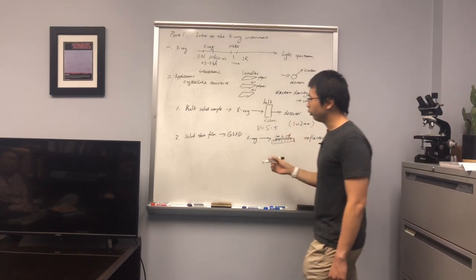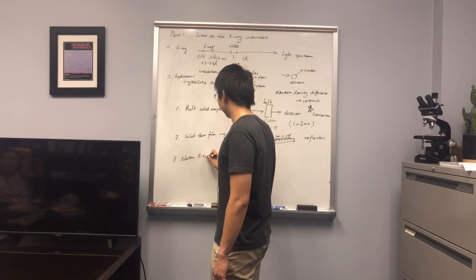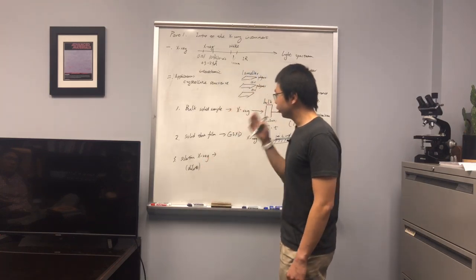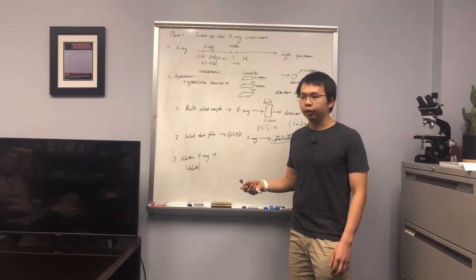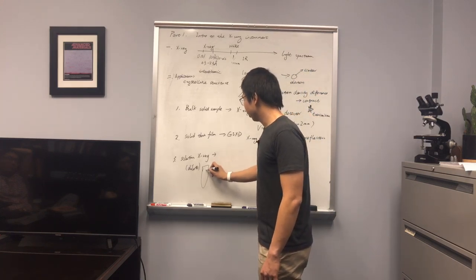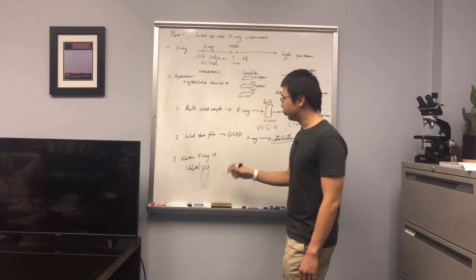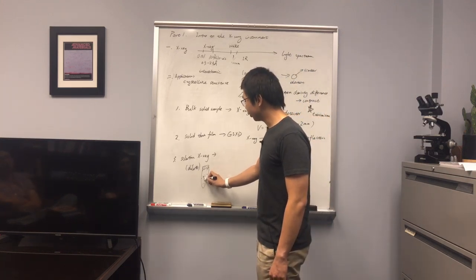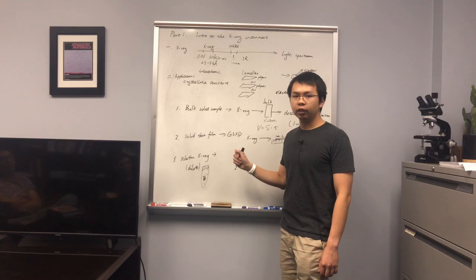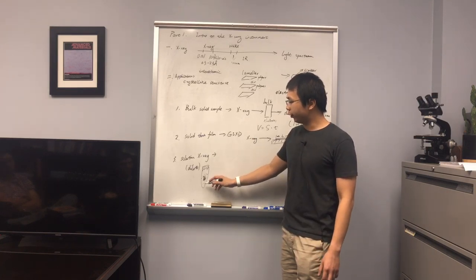What about solution samples? The solution x-ray we run in our lab needs to be a very dilute solution, because in the solution phase there's typically no ordered structure. For a solution x-ray sample, we have a capillary with a solution inside, containing two components: polymer chains and solvent. If you only run a pristine solvent, the electron density is uniform from one point to another, giving very random scattering with no useful information.